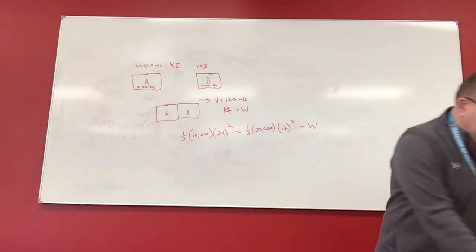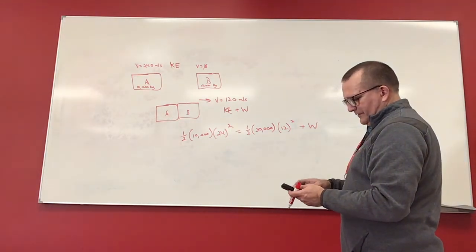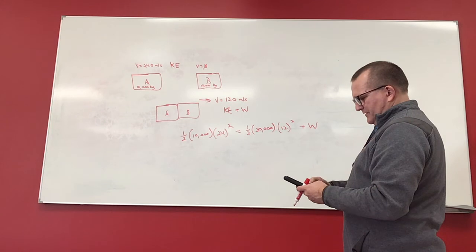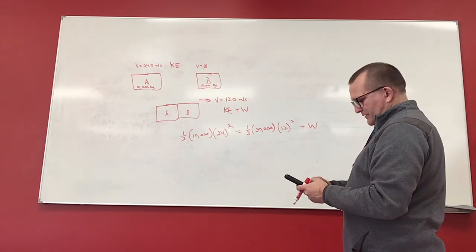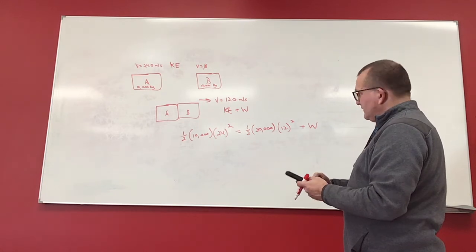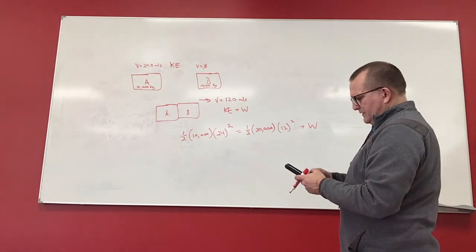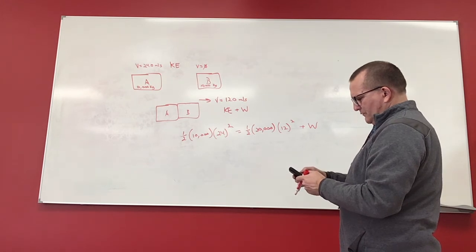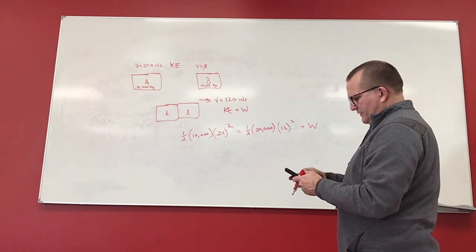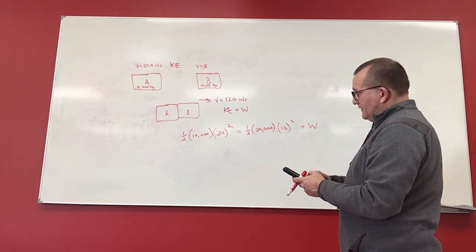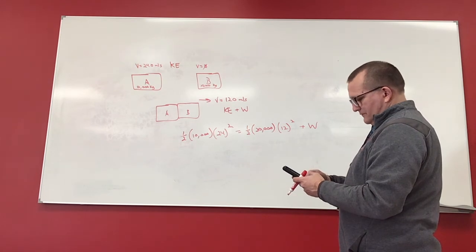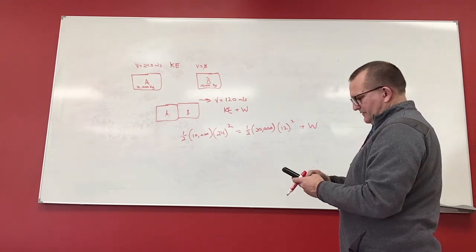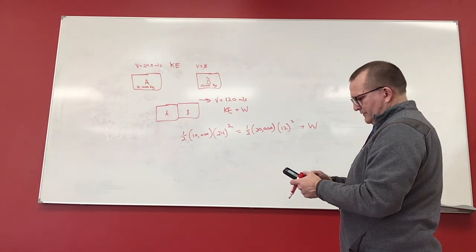And then we just calculate away to get to this. So let me open up my calculator. And I see one-half times 10,000 times 24 squared minus all of this, which is one-half times 20,000 times 12 squared. One-half times 20,000 times 12 squared, there we go.